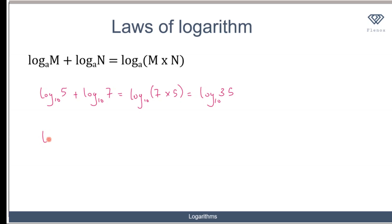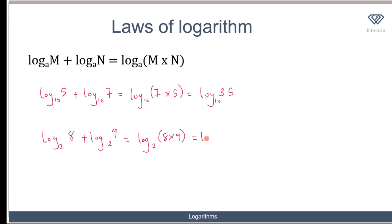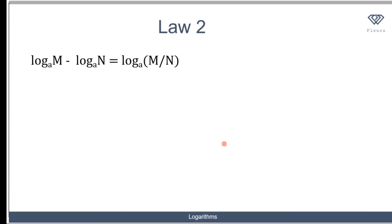Similarly, log 8 to base 2 plus log 9 to base 2 is the same as log to base 2 of 8 times 9. And 8 times 9 equals 72, so that would be log 72 to base 2.